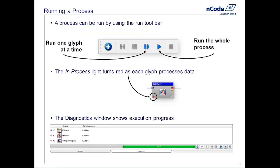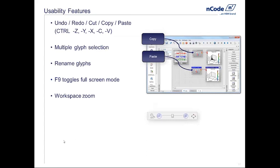Once the process is built, click the blue triangle button at the top of the interface to run it. As the process runs, you'll see in-process lights flicker on your glyphs, showing which glyph is currently computing. For the demonstrations today, the models are fairly small so those lights don't flicker very long. The diagnostic window can also be opened for debugging purposes, allowing you to see how much time each glyph required to run computations.